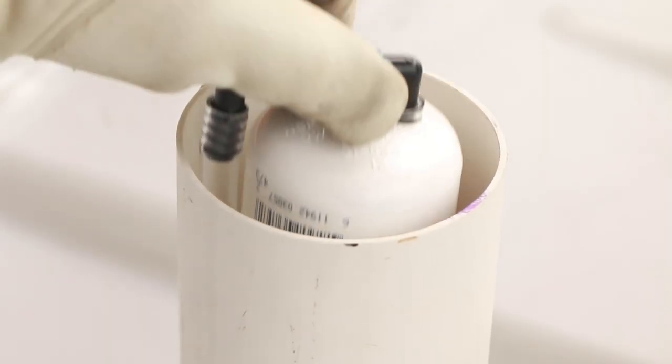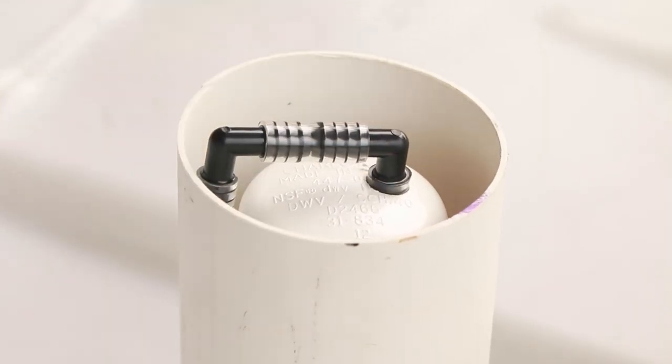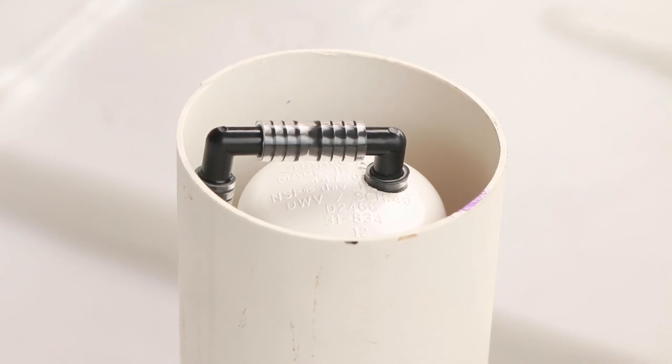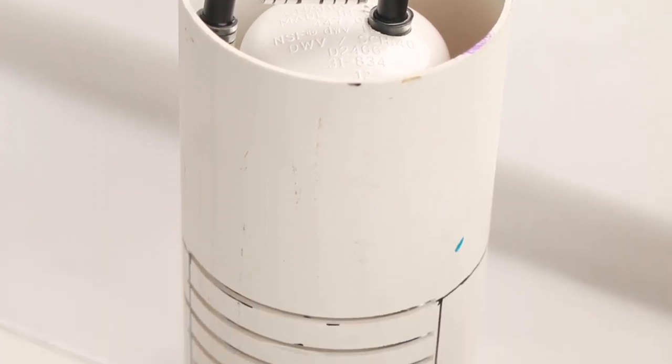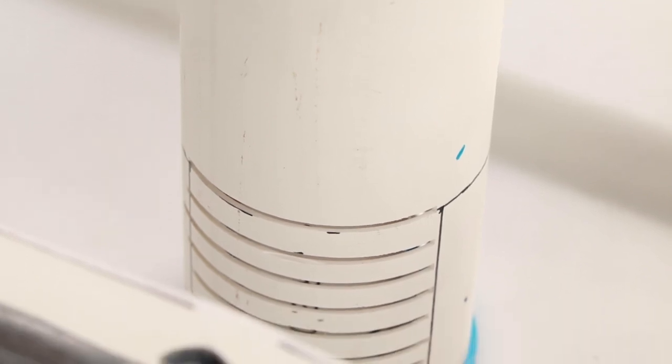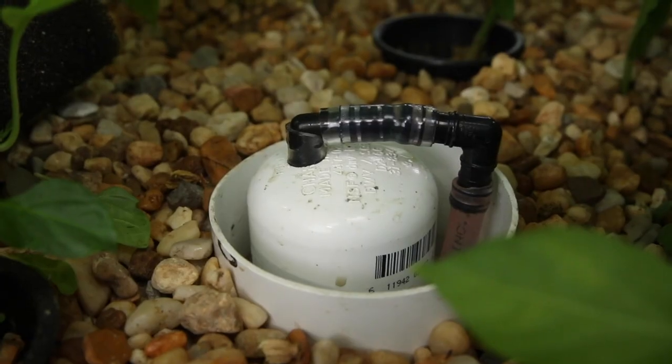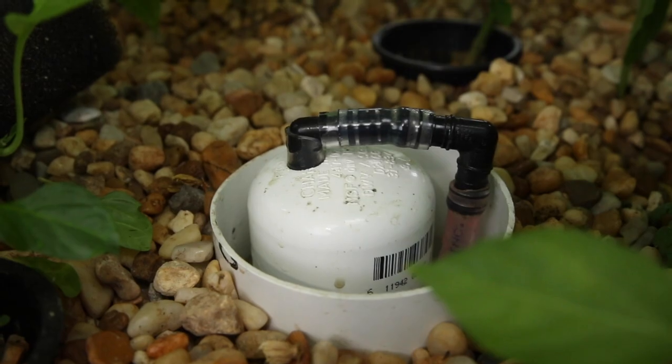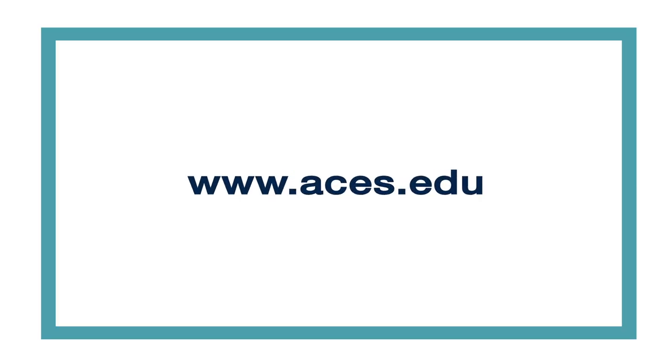Place the bell siphon over the standpipe in the grow bed inside of the 4-inch protective sleeve. Because it has no moving parts, once properly fitted, this bell siphon is very reliable and requires almost no maintenance.